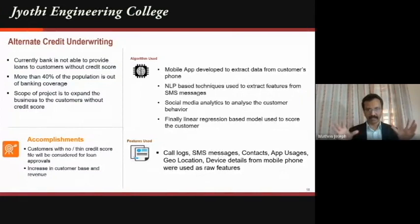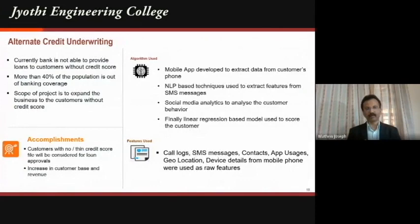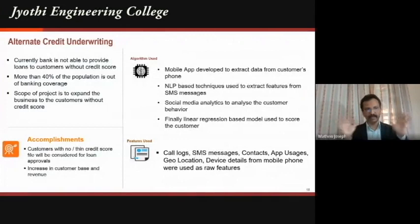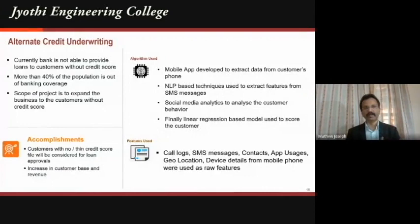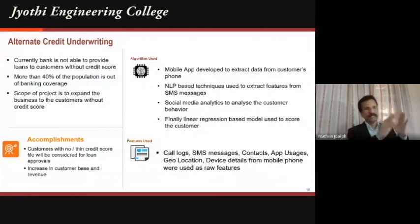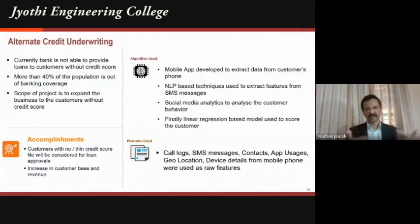We built a data science solution using NLP, machine learning, and deep learning models. A mobile app installed on your phone captures mobile data and social media data — all public domain historical information. We analyze this data to assess your credibility and generate an internal credit score. The moment you apply for a personal loan, it gets approved within two minutes. With just this one solution, we onboarded 40% of the previously unbanked population in those countries.